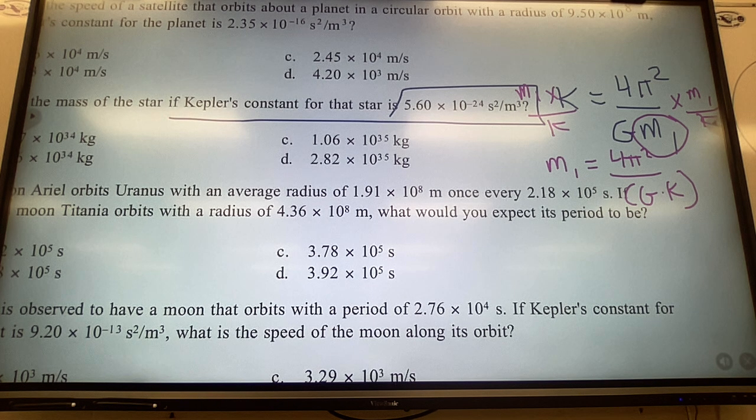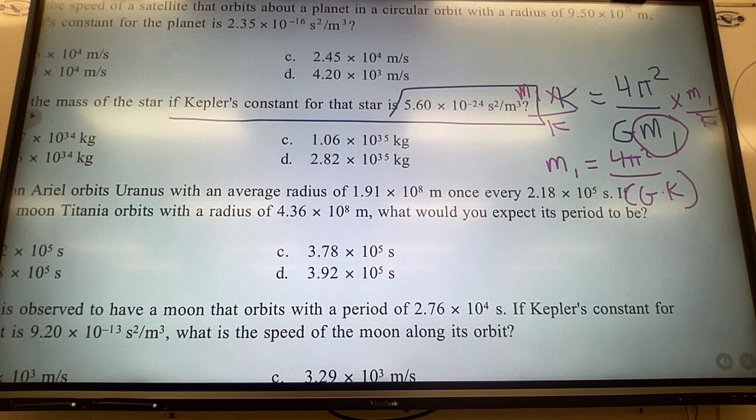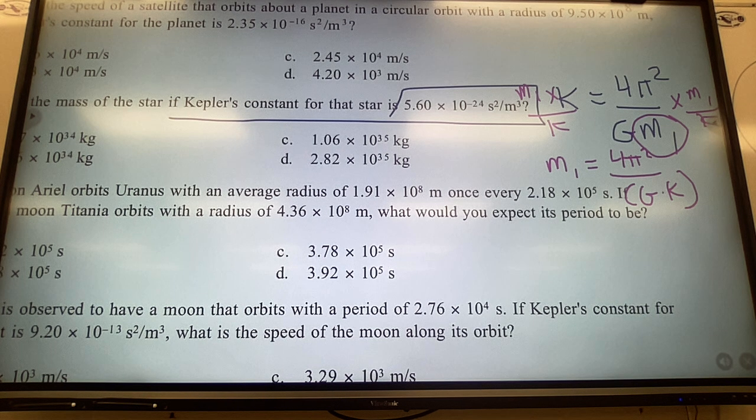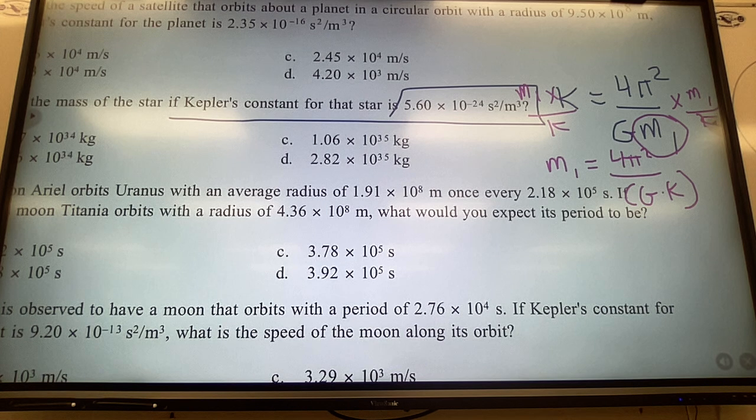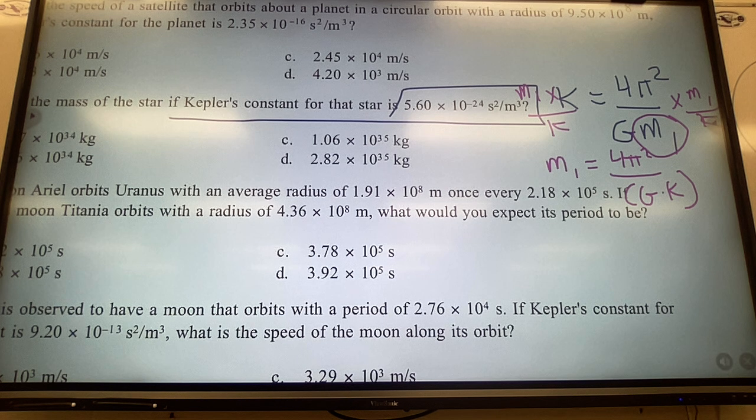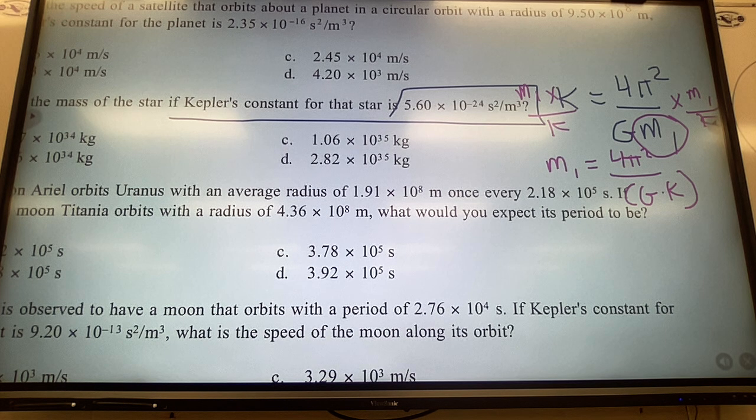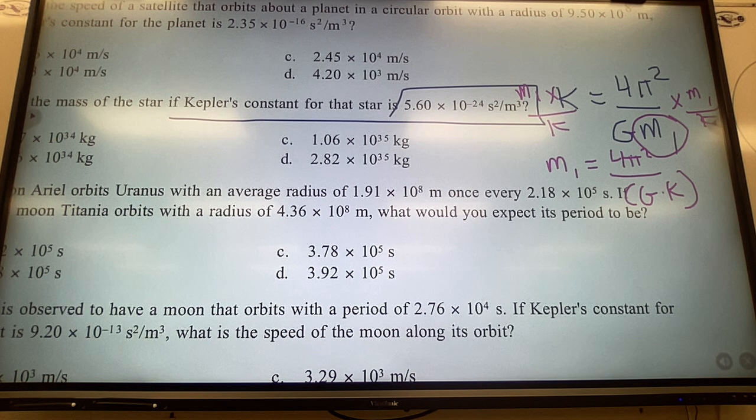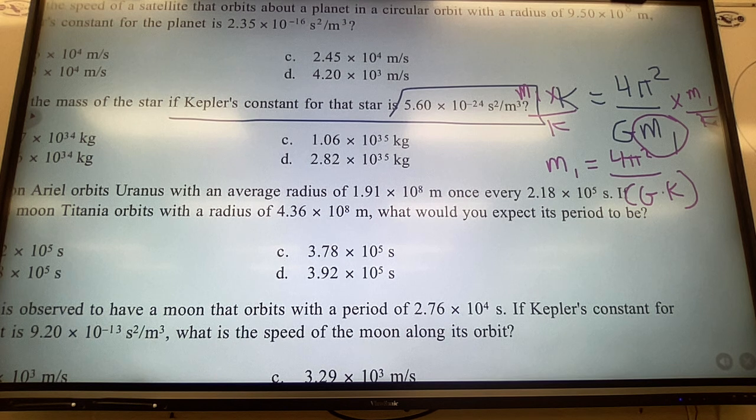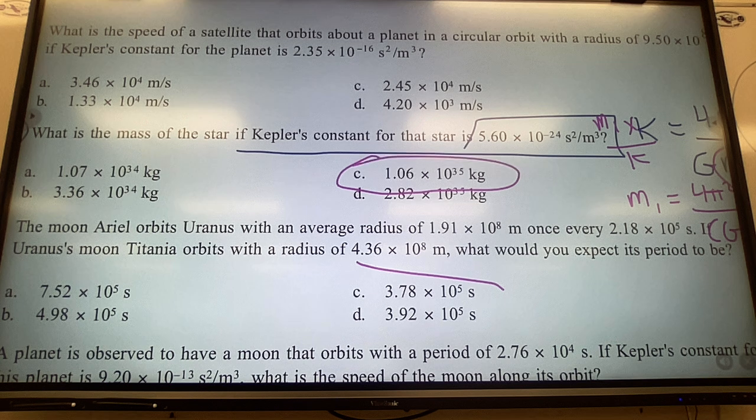6.67e-11. Oh whoops, I made that negative to start with. Wait, I'm going to use my other calculator. So 4π² divided by 6.67e-11 in brackets, times this number K, which is 5.6e-24. And yeah, I got 1.06e35. Hopefully that's up here. Oh, looks like it is: 1.06×10³⁵.